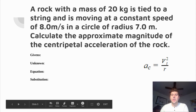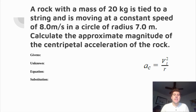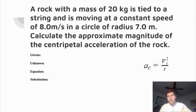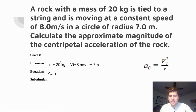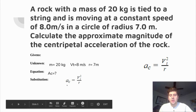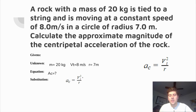Our next problem: a rock with a mass of 20 kilograms is tied to a string and moving at a constant speed of 8 meters per second in a circle of radius 7 meters. Calculate the approximate magnitude of the centripetal acceleration on the rock. Our givens: mass is 20 kilograms, velocity or speed is 8 meters per second, and radius is 7 meters. Our unknown is the centripetal acceleration of the rock. Based on what we have, the best equation is: centripetal acceleration equals tangential velocity squared divided by the radius.